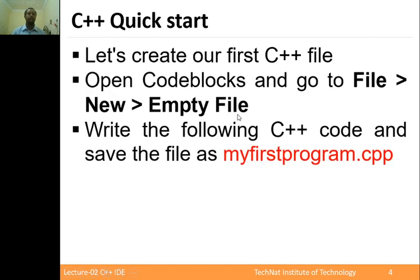After installation, you can see the Code::Blocks working environment. Go to File, then New Empty File. The program is saved with a file name. Save your C++ code with the .cpp file extension — for example, name your file and remember to use the .cpp extension for the C++ source file.